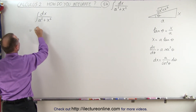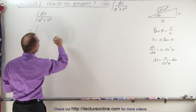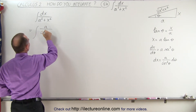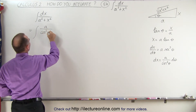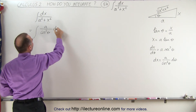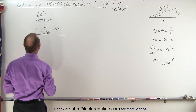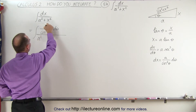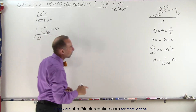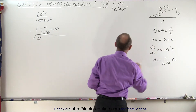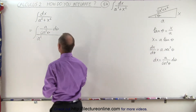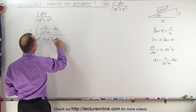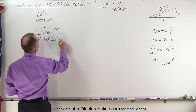This is equal to the integral of dx, which can now be written as a divided by the cosine squared of theta, times d theta in the numerator. And in the denominator, we get a squared plus x squared. And since x is equal to a times the tangent of theta, we can write this plus a squared times the tangent squared of theta.